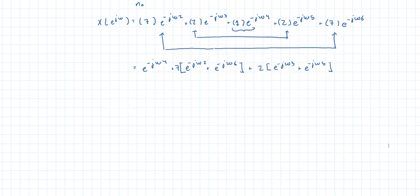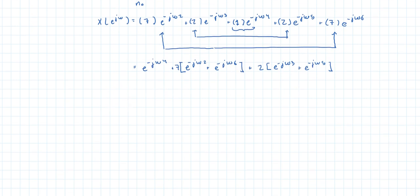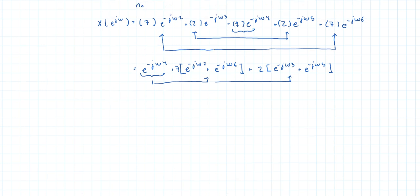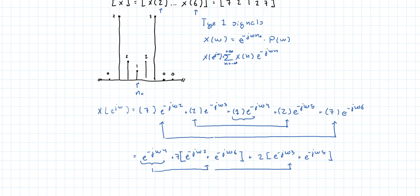Now the next step is to factor out the equivalent of the middle term for both of these guys. So we're going to factor out e to the minus j omega 4 for this and also for the second term. Keep in mind that the reason we're doing this is that we want to get back to the exponential form right here. So it makes sense to take this out and n sub-naught is 4.